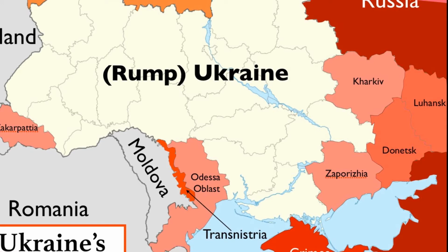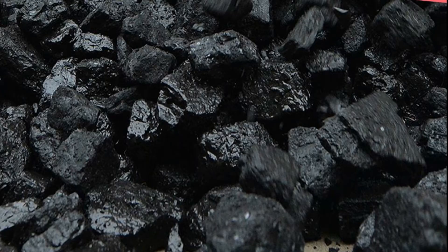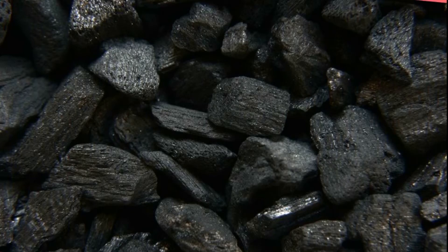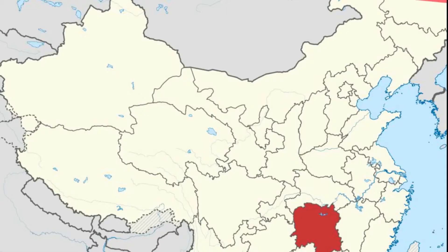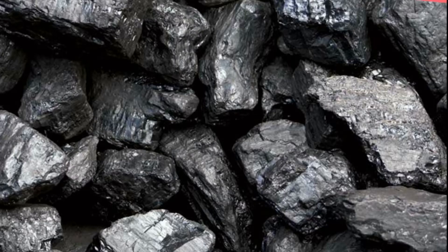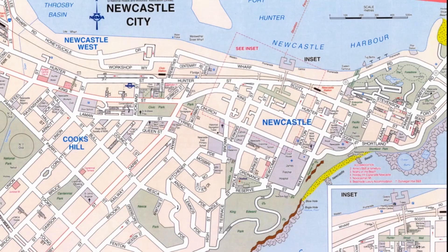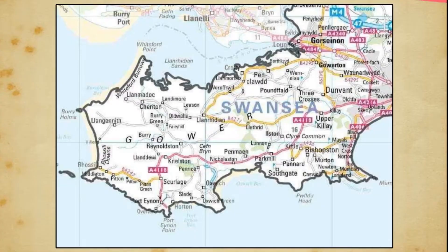Ukraine is another very important producer of coal. China also produces a huge quantity of coal. Coal mining states in China are Shanxi, Honan, Shandong, and Hunan. UK also produces high quality coal at Durham, Newcastle, Yorkshire, and Lancashire.